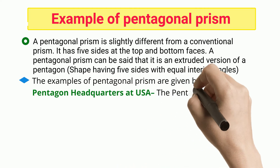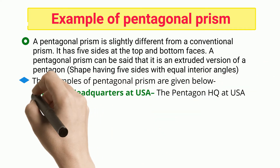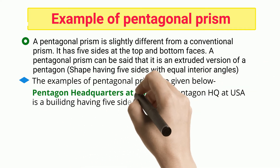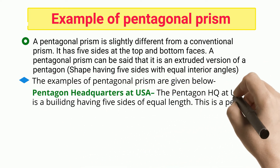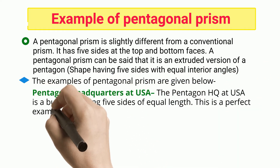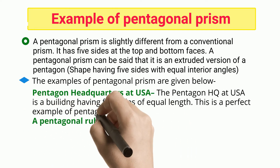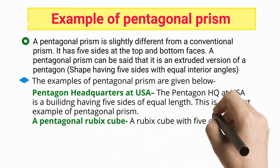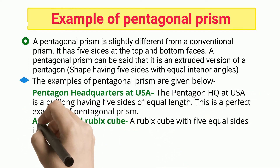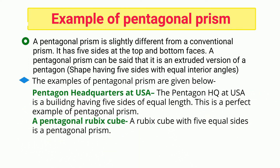Pentagon headquarters at USA: the Pentagon HQ at USA is a building having five sides of equal length. This is a perfect example of a pentagonal prism.